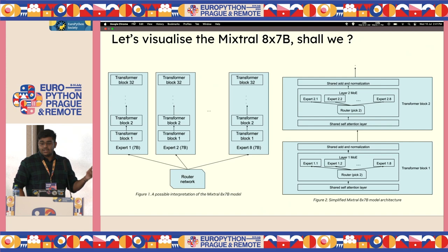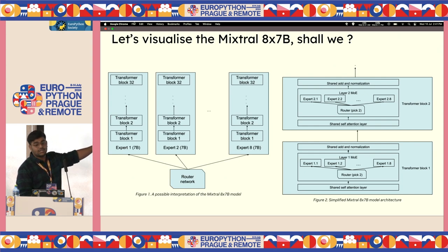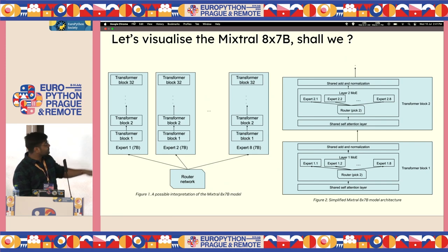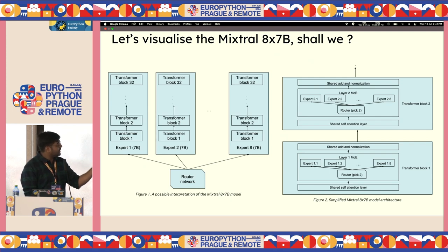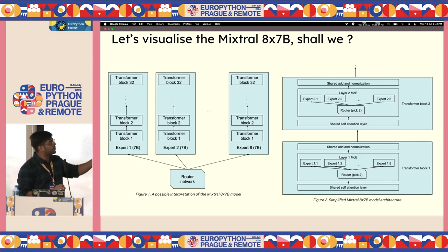You may have heard of the Mixtral 8x7B, which has beaten LLaMA 70B. You might picture it as a router network at the bottom with eight 7-billion-parameter models interacting — but that's not actually true. The actual representation of mixture of experts is that the only place where MoE is placed is at the feed-forward neural network. For LLMs, the position-wise feed-forward neural network is what gets replaced with the mixture of experts.